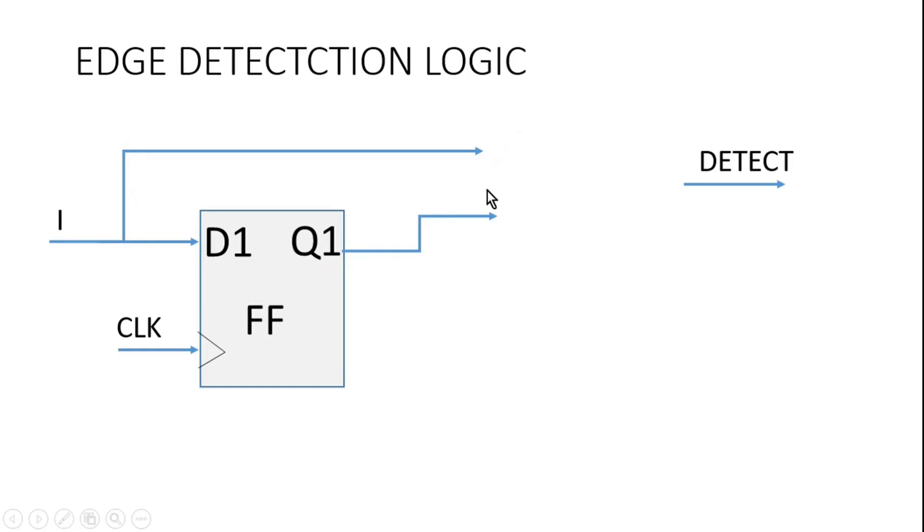Now here we have to figure out the combination logic which will finally give us a detect signal. And to do so, we need to create a truth table between I and Q1. From there, we can very easily figure out the combination logic. Now let me draw a truth table between I and Q1.